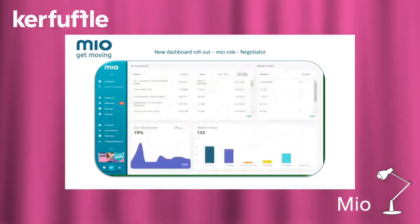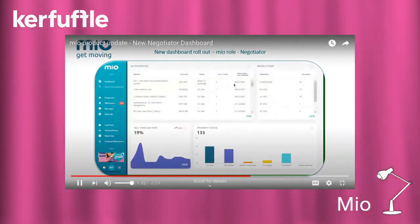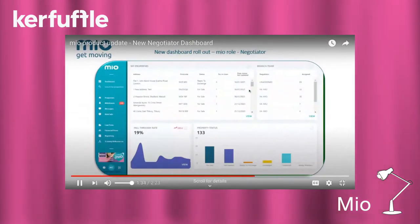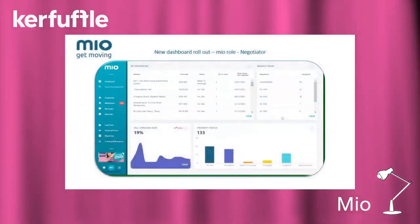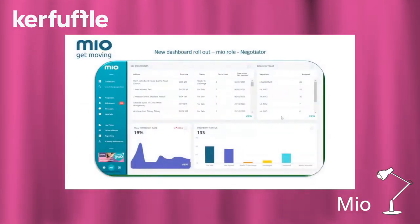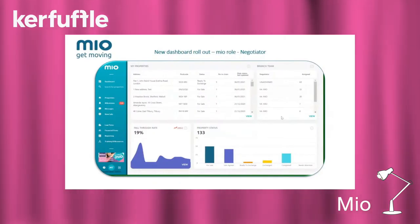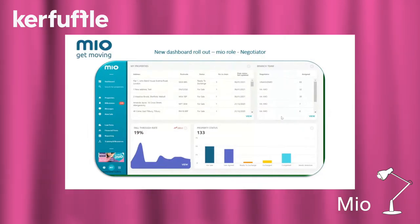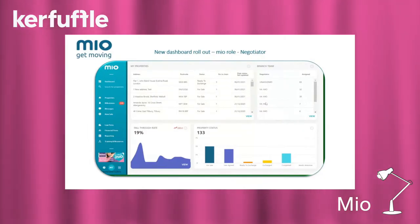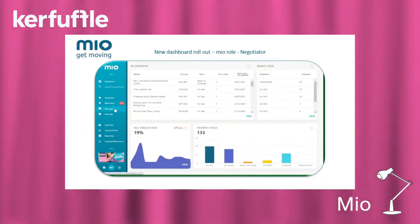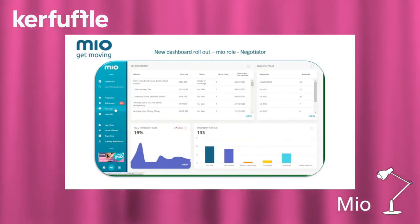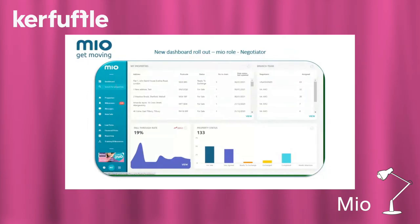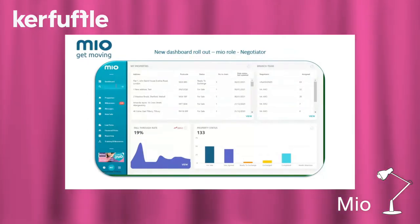Scroll down the page to view other tiles, including fall through rate and branch team report. This displays the split of properties assigned to users to self-progress across the branch. Finally, we've moved the milestones and message alert notifications into the left-hand menu, together with the property search tool, so they remain in constant view whatever you're doing in Mio.